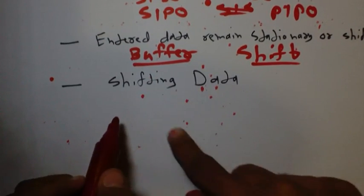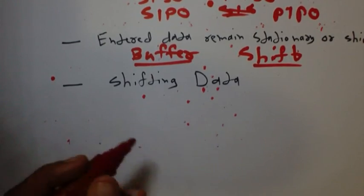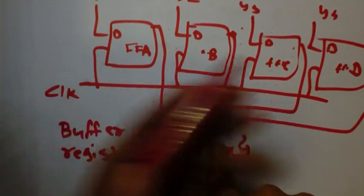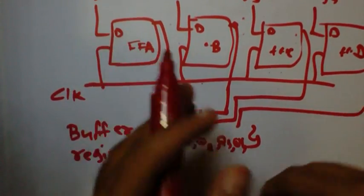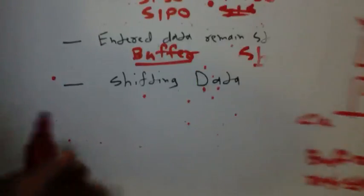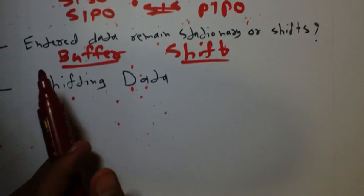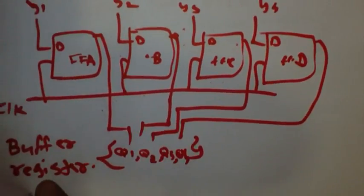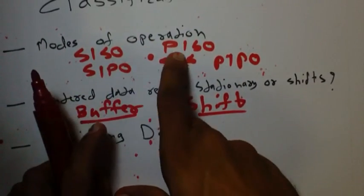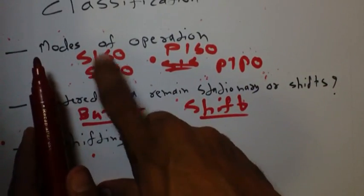For shift registers, data can be shifted left, shifted right, or shifted in both directions. Data can be shifted to the left side of the register, to the right side, or in both directions. Now, having seen the buffer register, we will look at shift registers. There are four modes: serial in serial out, serial in parallel out, parallel in serial out, and parallel in parallel out. We will now see serial in serial out.